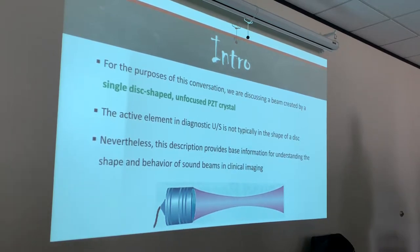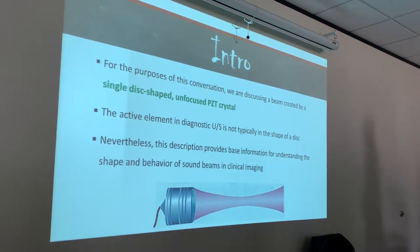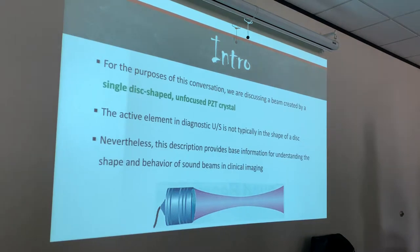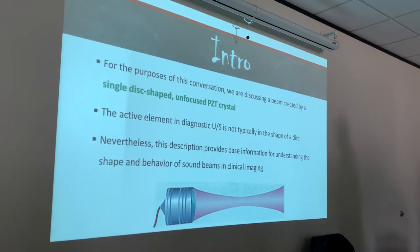We're going to talk about it from that aspect because you can also apply that to phased array transducers, which means they have multiple elements. The active element in diagnostic ultrasound is not typically the shape of a disc — it's usually the shape of the transducer face itself, the scan head itself. On a linear probe, it's usually a whole bunch of rectangles lined up across it. Nevertheless, this description provides base information for understanding the shape and behavior of sound beams in clinical imaging. So for the purpose of this conversation, we're talking about single, disc-shaped, unfocused PZT crystals — one active element — even though we know in a regular ultrasound transducer there are hundreds of active elements.